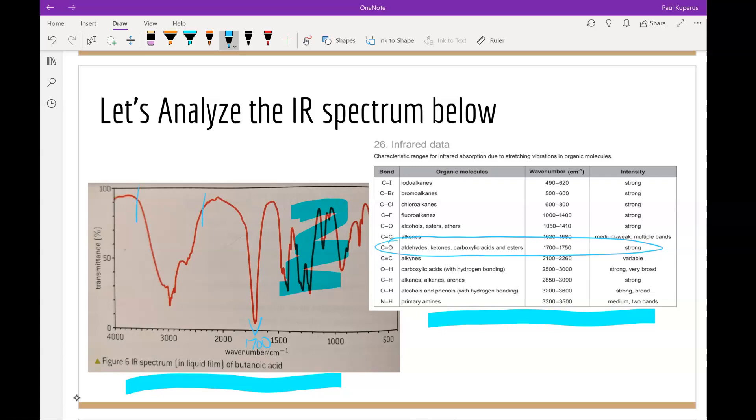So we see we have a very broad peak that is also very strong, and it starts approximately at around 2500 and goes to well over 3000. This strong, broad peak corresponds well with our carboxylic acid hydrogen bond. The OH on a carboxylic acid has a strong, broad peak from 2500 to 3000 nanometers.